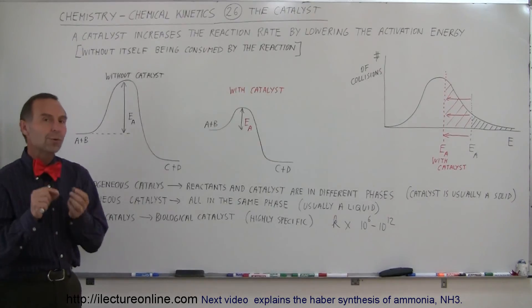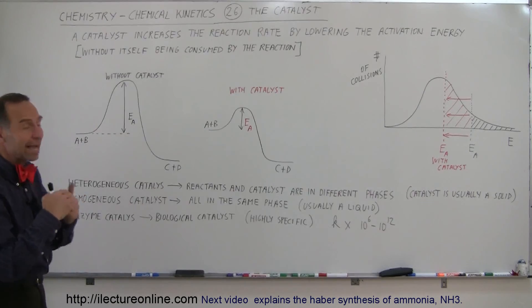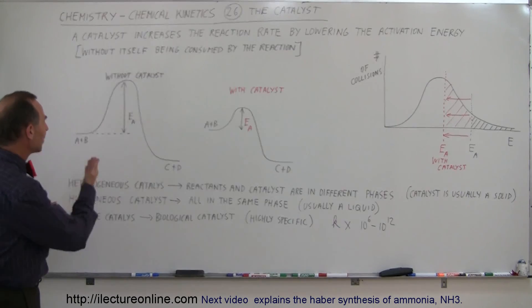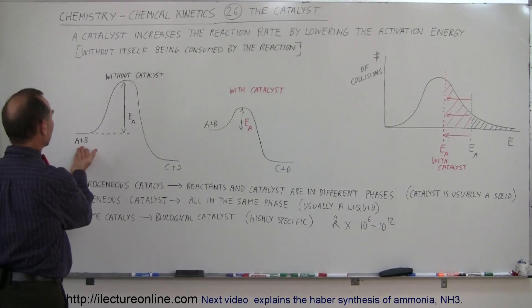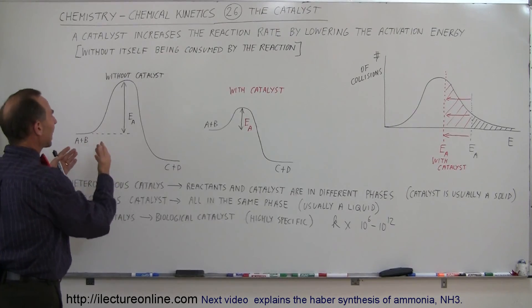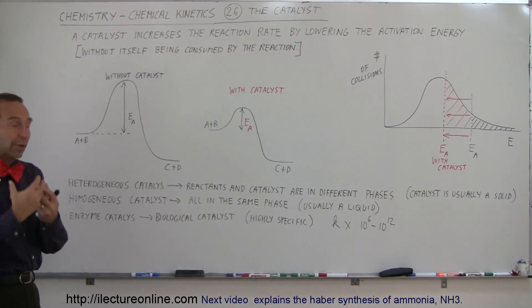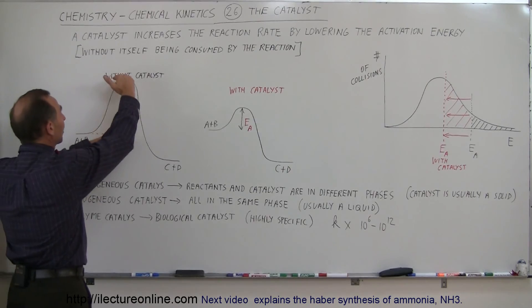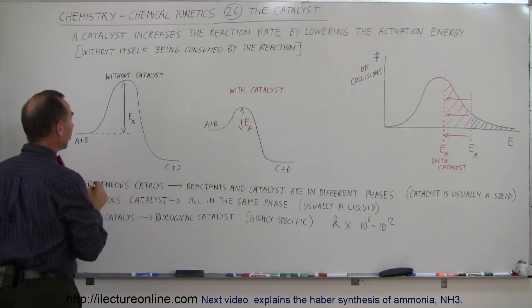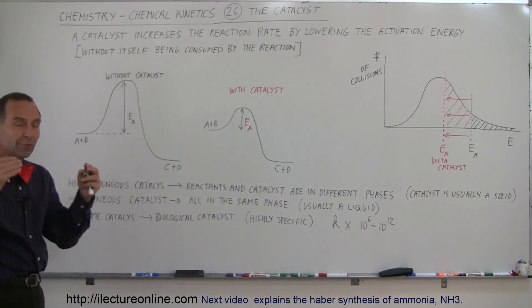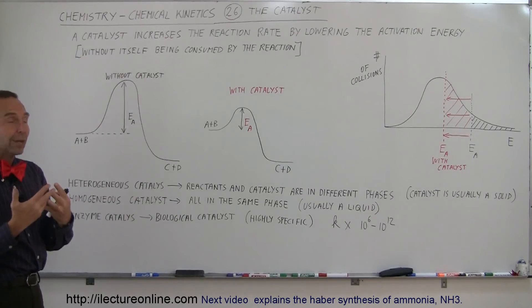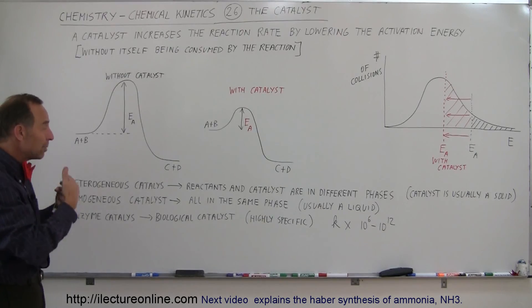It says a catalyst increases the reaction rate by lowering the activation energy. So here we have an example where we have two reactants and in order for them to react, they have to have enough kinetic energy to make the reaction take place. And so this represents graphically the amount of activation energy. So only a small number of the actual collisions with these reactants will actually result in a reaction.